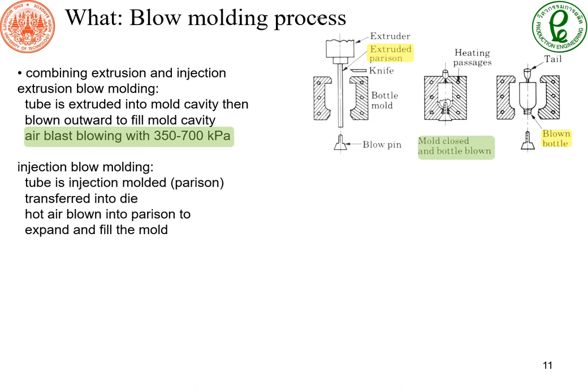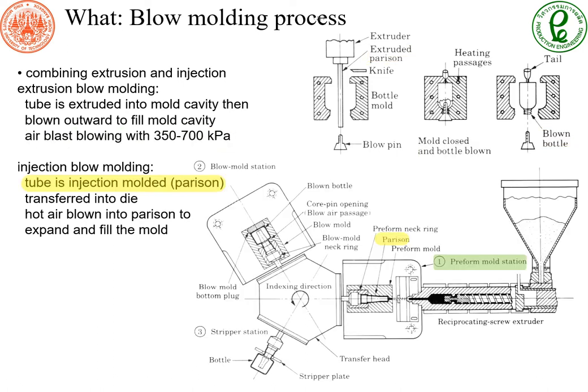Blow molding is used to make plastic bottles or gallons. We start by extruding a plastic tube, called a parison, into a mold cavity. Then we apply high air pressure into the parison, which expands and fills up the mold. Another approach is to perform the process continuously: we extrude the parison in step 1, then an indexing table moves it to the blow molding station for step 2. The blown bottle is then moved to a stripper station to remove flashes. Nowadays, many bottles can be processed at the same time.